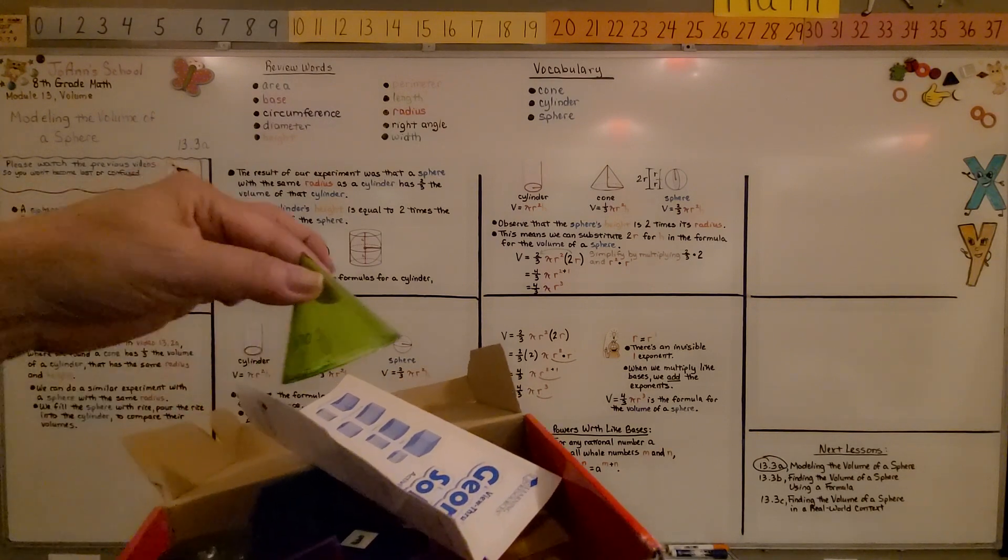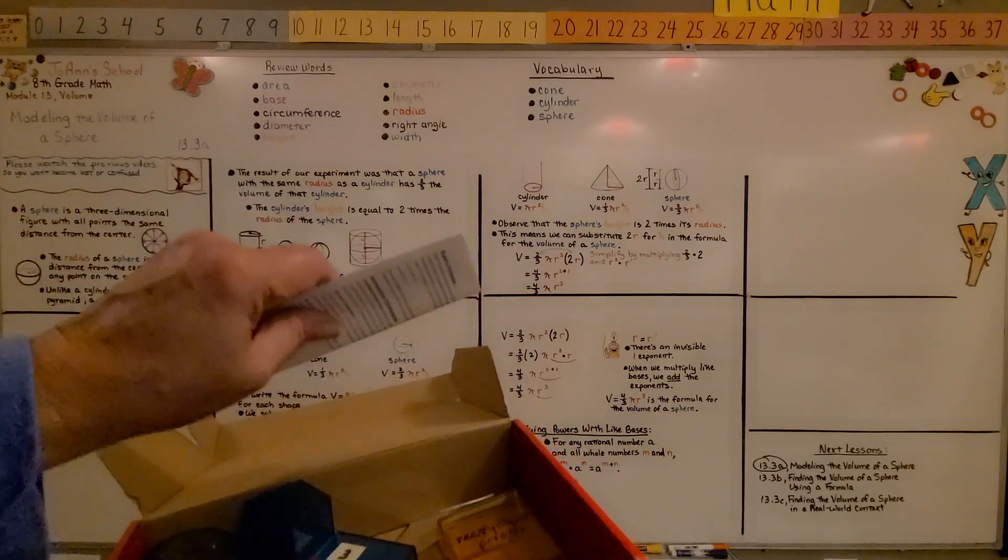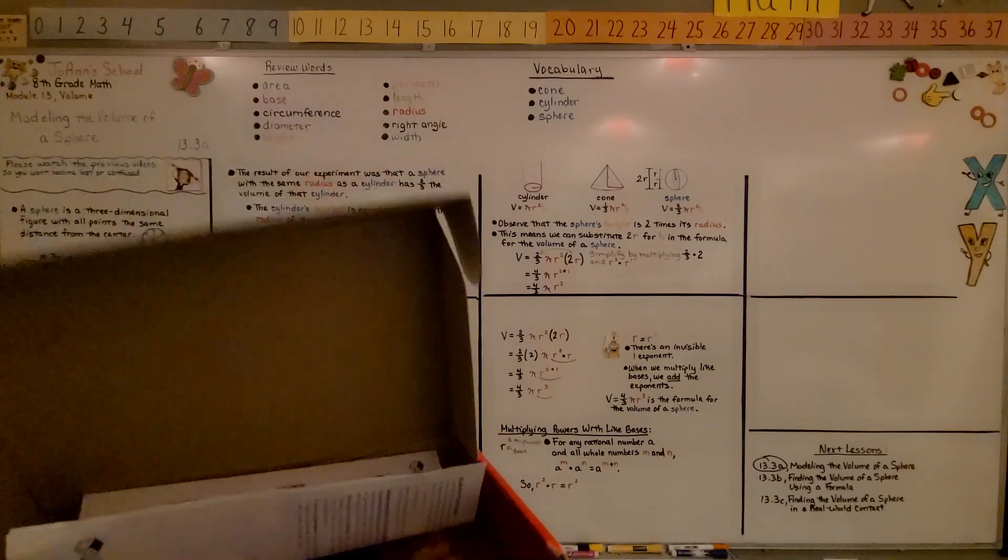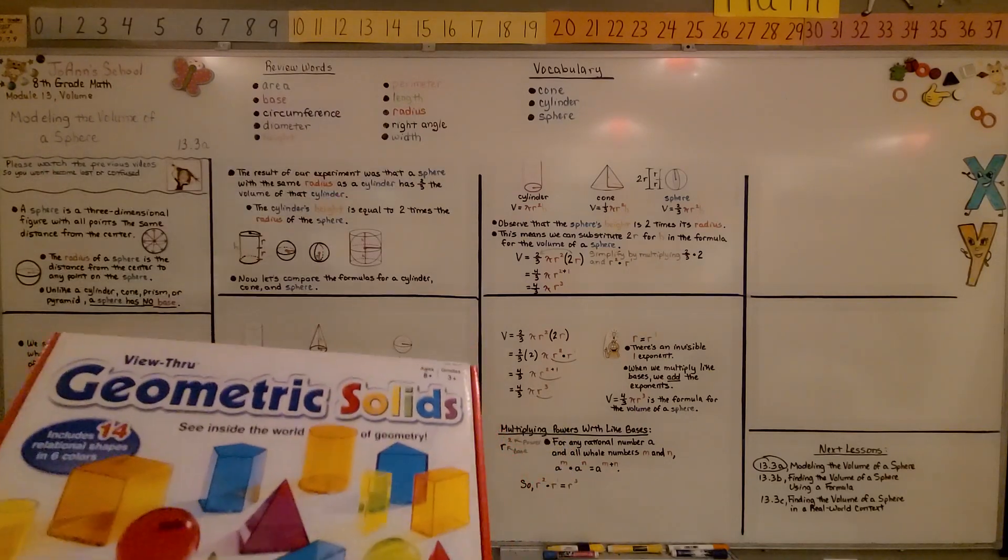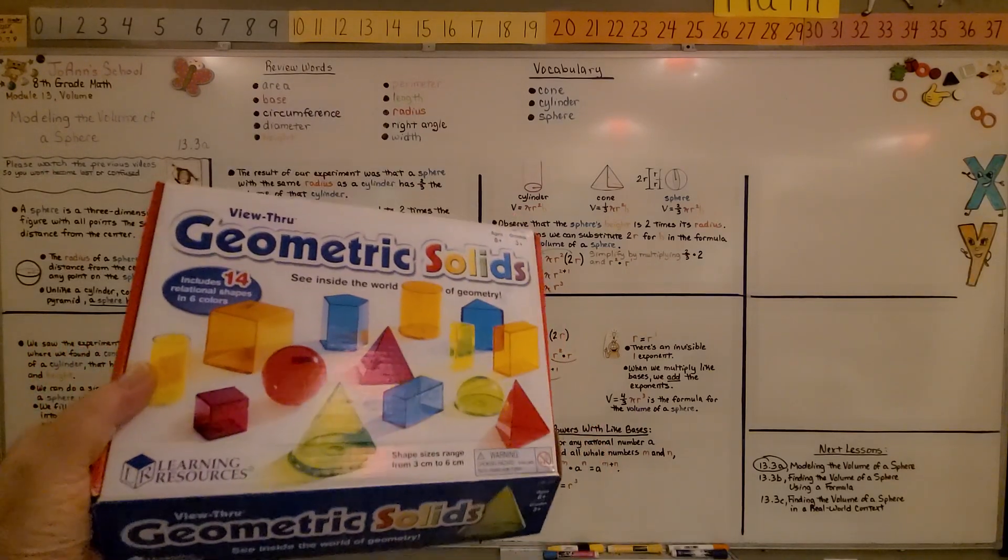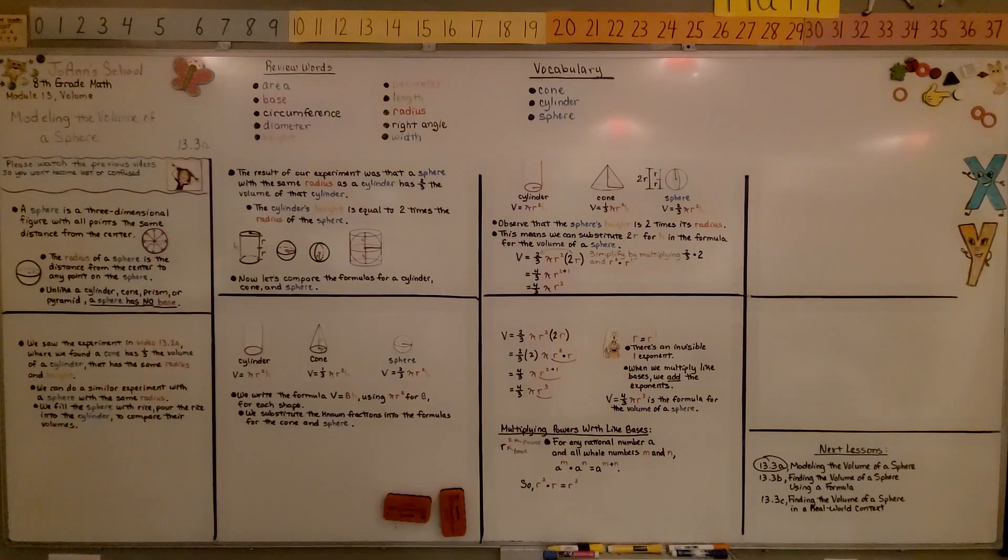Let me open this up. The geometric solids, it comes with all different colors of solids, prisms. We've got a cone here. And these are great to work with as manipulatives. So it's geometric solids by Learning Resources. You'll be able to do the cylinder and sphere experiment with some rice. You'll also be able to do the cone and cylinder experiment. Have a wonderful day and join me for part B. Bye.